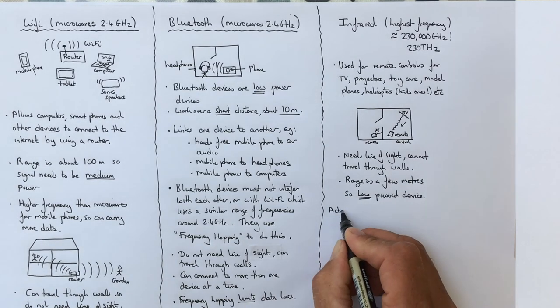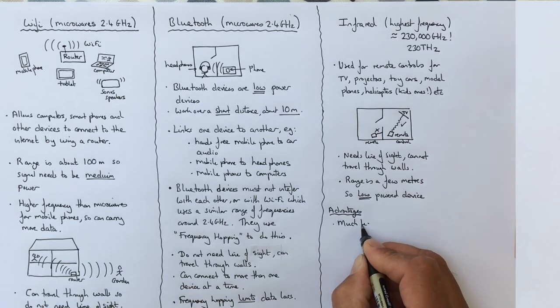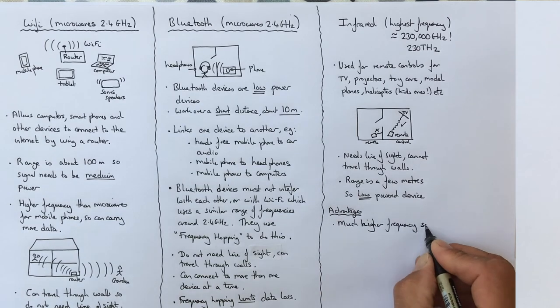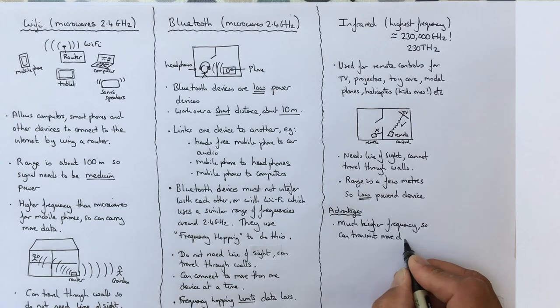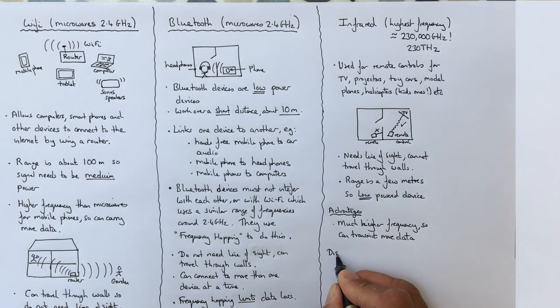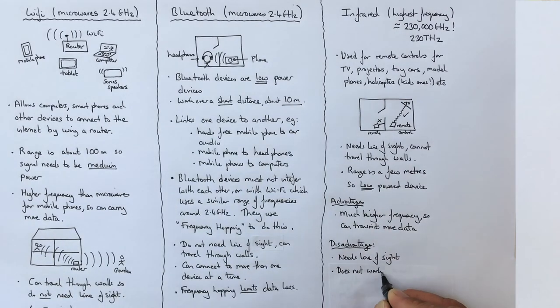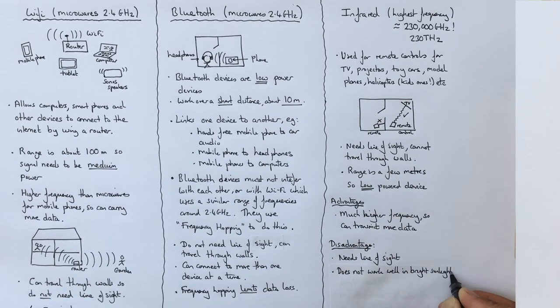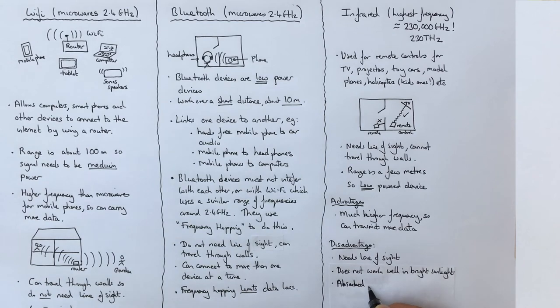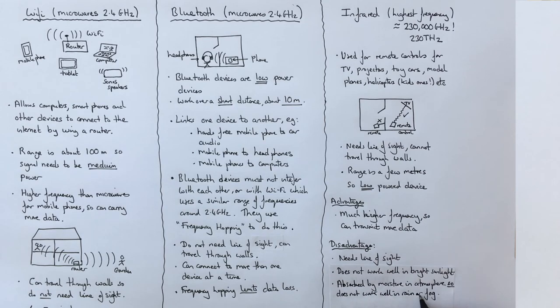The key advantage of infrared over Wi-Fi and Bluetooth is its much higher frequency allows it to transmit more data. The key disadvantages are it needs line of sight. It won't go through walls. Another disadvantage is it won't work well in bright sunlight. So if you're outside trying to control a kids remote control car, it might not work that well. Finally, infrared is absorbed by moisture in the atmosphere. So things won't work well in the rain or the fog.